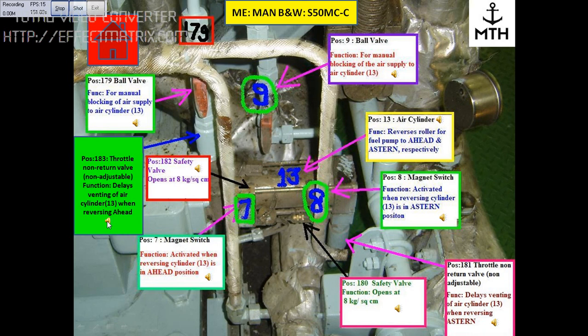This block is position number 182, which is a safety valve. The function of this valve is to delay the venting of air cylinder number 13 when reversing ahead.